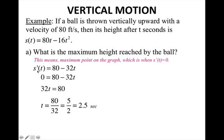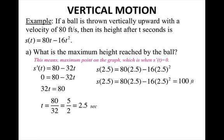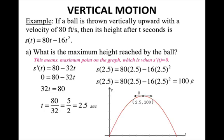That's not what the question is asking — the question asks what is the maximum height, not when the ball reaches its maximum height. So to get the actual maximum height, we plug 2.5 into the position function, because we know the maximum occurs at 2.5 seconds. Plugging it in and simplifying gives 100 feet. This is what the graph of the ball's path looks like: thrown upward, at 2.5 seconds it hits the maximum height of 100 feet, then turns around and comes back down to the ground.